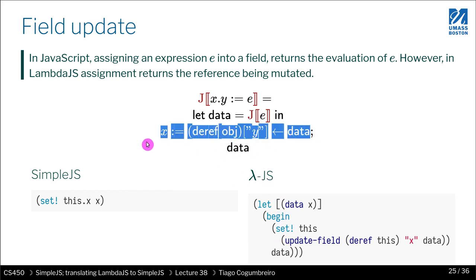So on the first line, this is assignment. So therefore, we use set exclamation mark. X is whatever variable was given. So in this case, it's going to be this. So that's what we have here, this. And then what we have, we have the deref object, which is this.